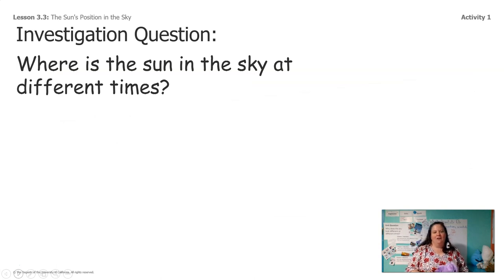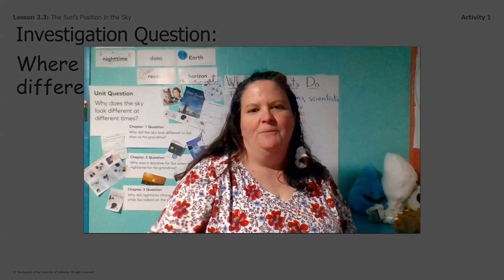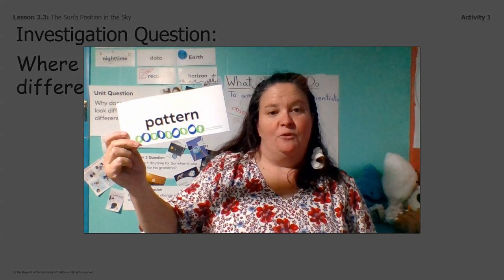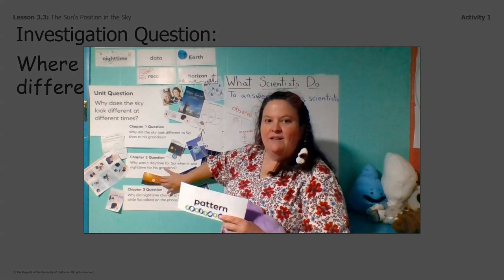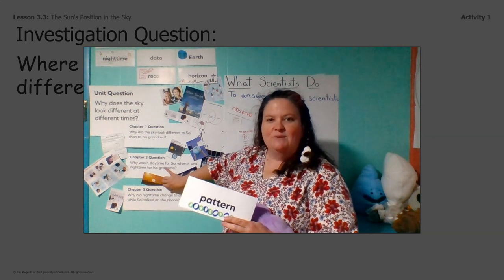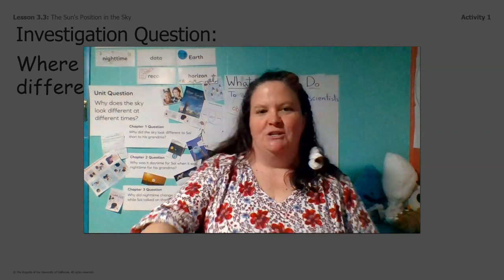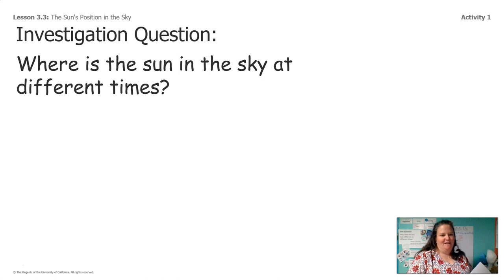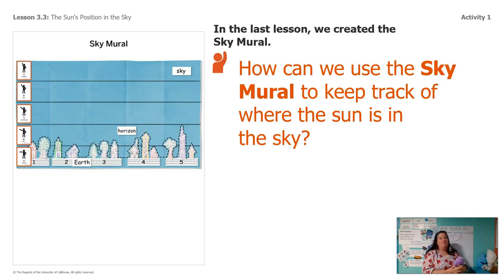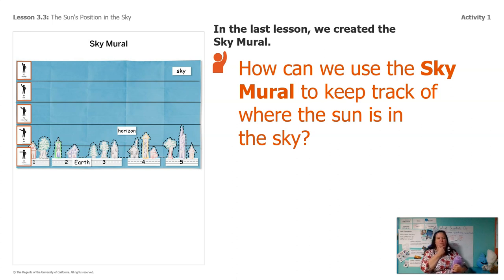And in order to investigate that question, we've been gathering data. One thing we did is we looked for patterns when we looked at this video of the sunset. We're gonna make some observations today to gather some more data to help answer this question: where is the sun in the sky at different times? I bet you remember that the last time we were together, we created this sky mural. So can you guys tell me some ideas of how we could use the sky mural to keep track of where the sun is in the sky?